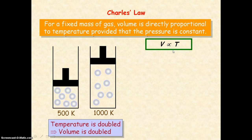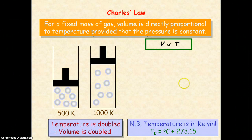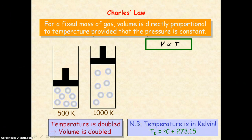It's important to note that the temperature here is absolute temperature — that is, temperature in Kelvin, the SI unit of temperature, and not in degrees Celsius. To get the temperature in Kelvin, we take our degrees Celsius value and add 273. So it's important that if you're given a value in degrees Celsius, you convert the temperature into Kelvin.